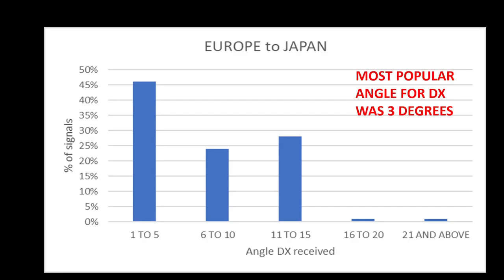So looking at Europe to Japan, what that over three decades of data managed to tell us is that, first of all, in the top right-hand corner as you can see in red, the most popular angle for DX was about three degrees. If you look along the bottom, those blue bars going up according to the various takeoff angles of received signals, one to five degrees, six to ten degrees, and so on. On the left, you've got the percentage of those signals received according to whichever takeoff angle it was received by.